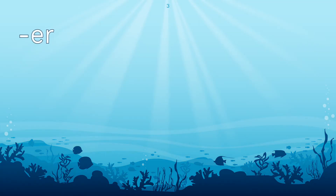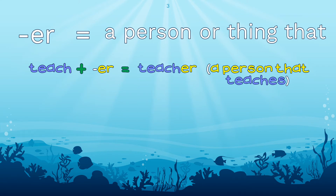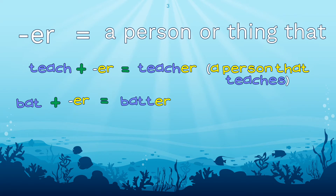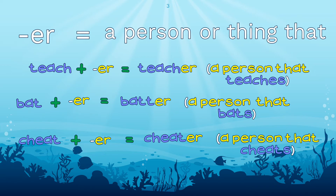The next suffix we are going to look at is the suffix -er, which means a person or thing that. This suffix also changes the meaning of a base word. Our first example is the word teach — by adding the suffix -er, it makes the word teacher, which means a person that teaches. In the base word bat, by adding -er, I make the word batter, which means a person that bats. And if I have the base word cheat and I add the suffix -er, I make the word cheater, which means a person that cheats.